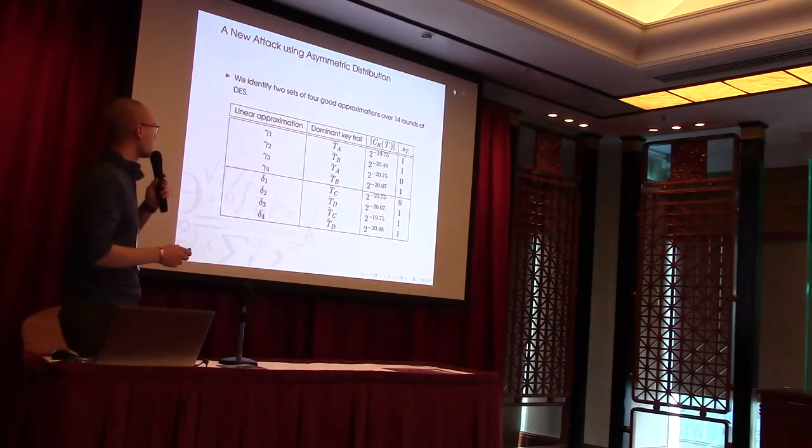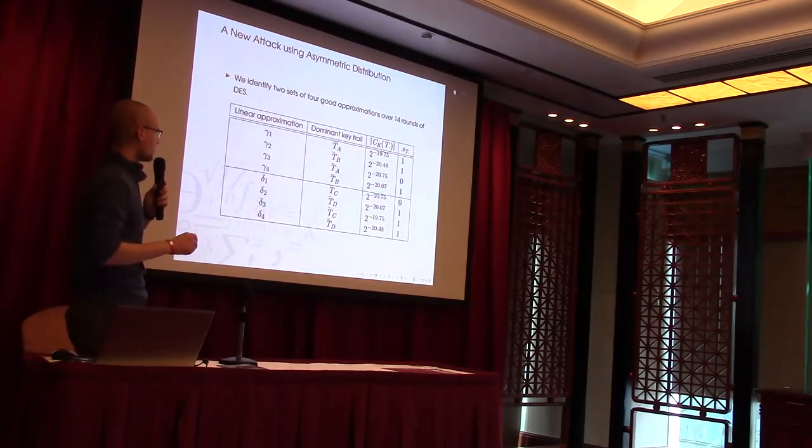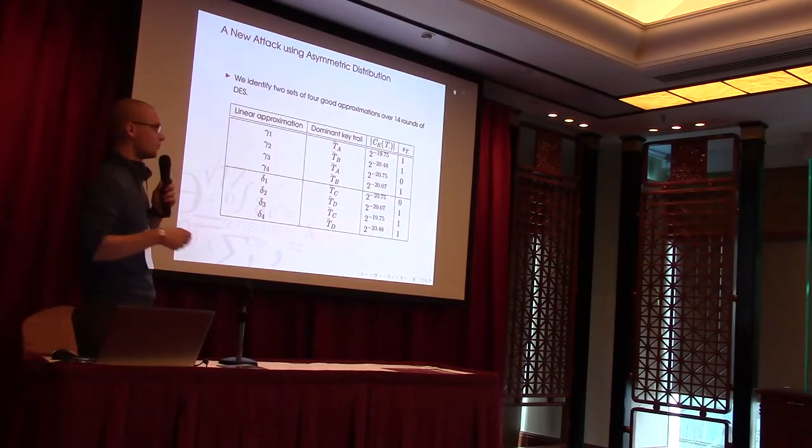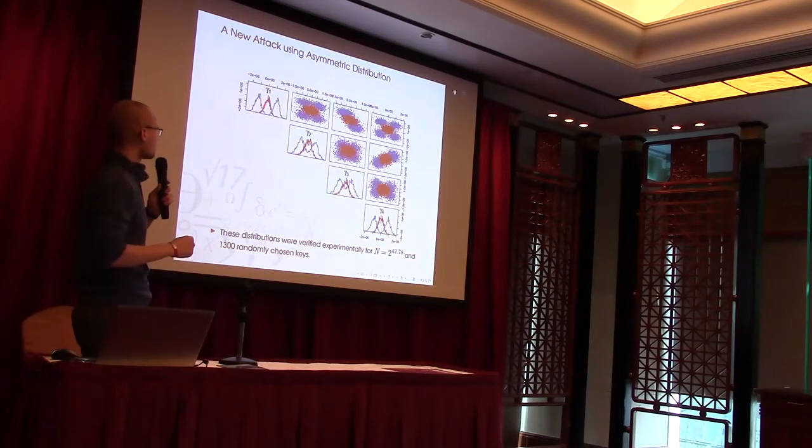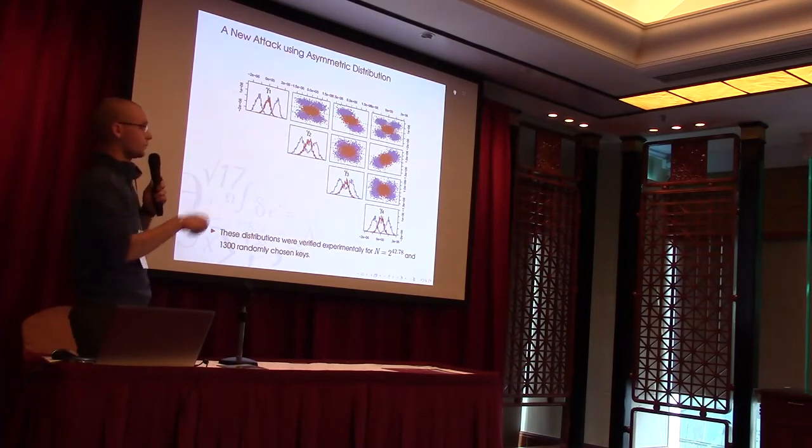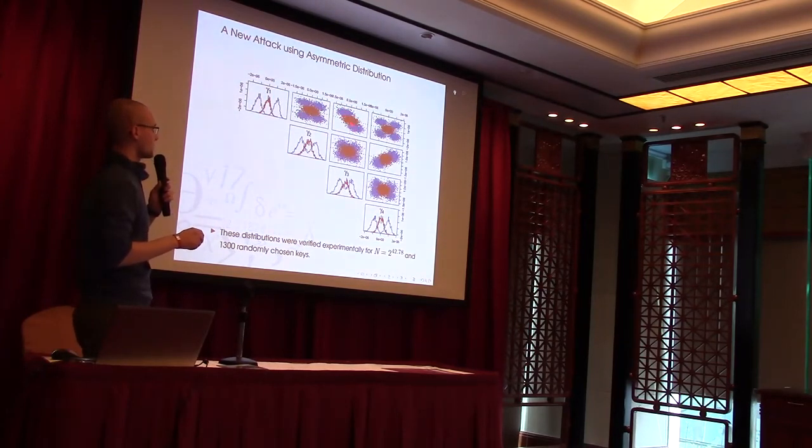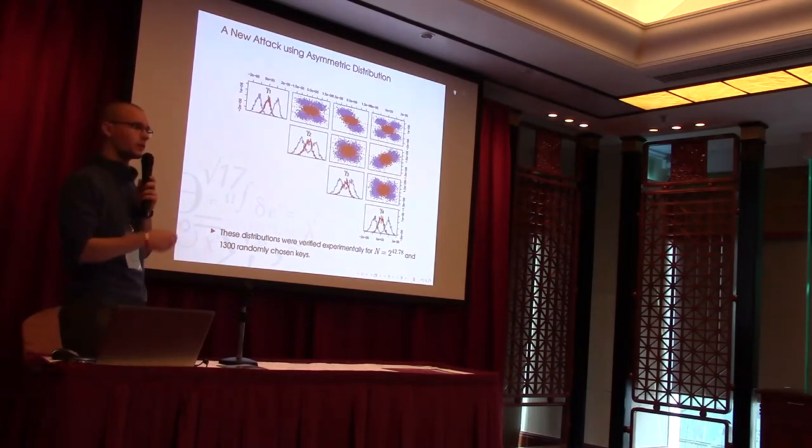Now to the actual attack. We identified two sets of four good linear approximations. These also include the approximations that Matsui originally used. What I put here is the dominant trails for these approximations. What we can see here, which is interesting, is that this approximation and this approximation, for example, have the same dominant trail. Or in fact, dominant key trail. What I mean by that is that the sign of these approximations are defined by the same key bits. So if we look at their distributions here, blue is right key and red is wrong key. Then the joint distribution of this gamma 1 and gamma 3 here is not symmetrical. So if one correlation here is negative, then the other is always positive and vice versa. And that should give us some extra distinguishing power. By the way, we actually verified these distributions. This is the model distribution. We verified these practically by doing experiments and they match very well.